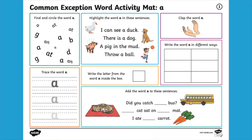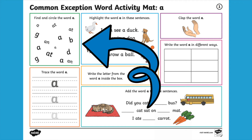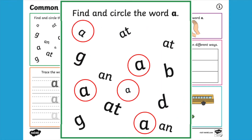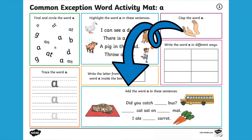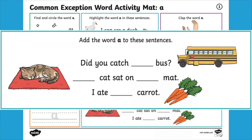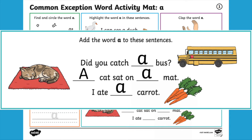Let's look a bit more closely at some of the question types that your children will find. This question asks your children to find and circle the common exception word. Here the common exception word is 'a'. For this question your children have to include the common exception word into the sentences to complete them.